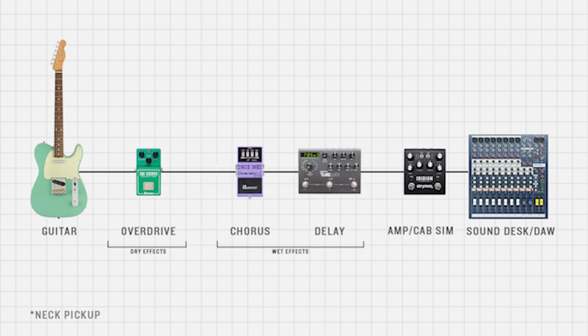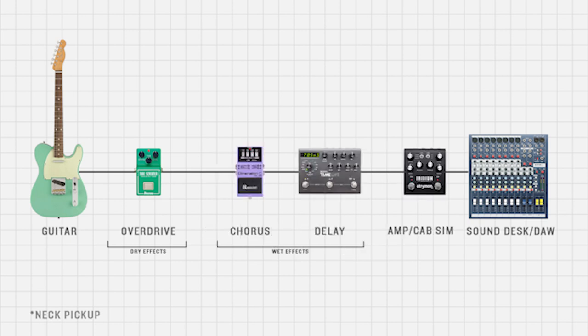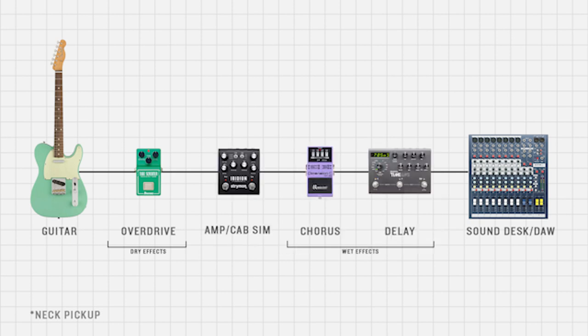Now we're going to do some examples going back and forth, adding in some wet effects, to show you the difference between Iridium in the middle of your chain — between overdrive and wet effects — versus overdrive, wet effects, then Iridium into the computer. Let's also listen to the Iridium in the middle of the chain versus at the end of the chain on the bridge pickup to hear the tonal differences.